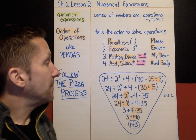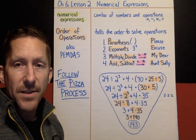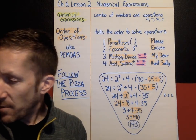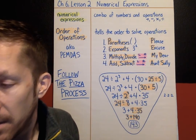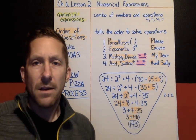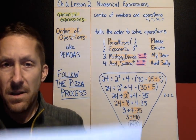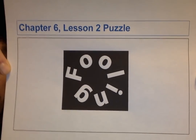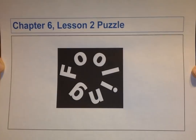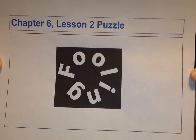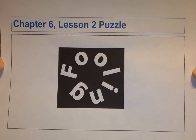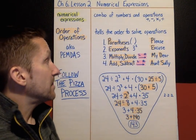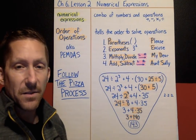Follow a process — here is a process for numerical expressions. Have fun solving some order of operations problems on this lesson. And before I let you go, of course we've got a hidden treasure puzzle. Here is this lesson's hidden treasure puzzle — Chapter 6, Lesson 2. Solve that and see what common words or phrase you can come up with. That does it for Lesson 2. See you soon for Lesson 3.